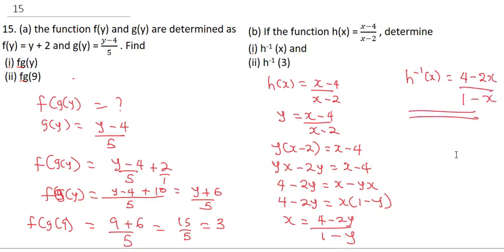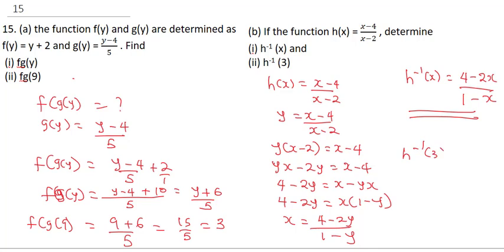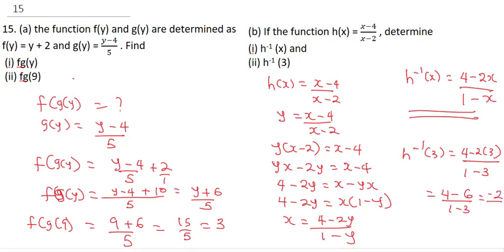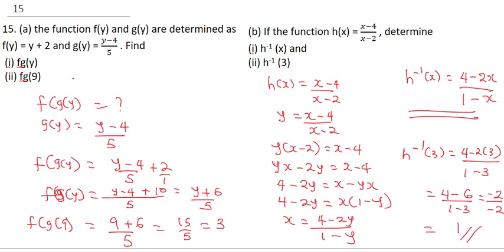This is h inverse of x. Now in order to solve for h inverse of 3, we substitute 3 in: 4 minus 2 times 3, all over 1 minus 3. This gives 4 minus 6 over 1 minus 3, which is negative 2 all divided by negative 2, and that gives us 1. So our final answer is 1.